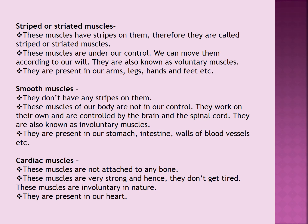Smooth muscles don't have any stripes and they are not in our control. They work on their own and are controlled by the brain and spinal cord, therefore these muscles are known as involuntary muscles. We can't control the process of digestion or the flow of blood in our blood vessels — smooth muscles are present in the stomach, intestines, and walls of blood vessels.